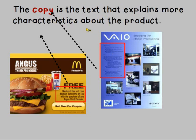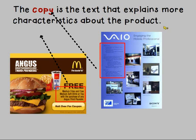The copy is the text that explains more characteristics about the product. So for example, here we have the illustration, we have the headline, and then here we have more information about the food that is advertised in this ad or poster. Here, in all this area, we have a lot of text, words that explain the things about this computer.